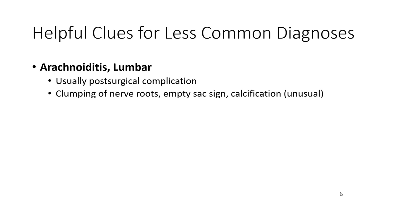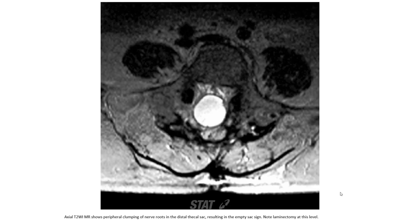Arachnoiditis is usually a post-surgical complication, featuring clumping of nerve roots, empty thecal sac sign, and calcification and ossification. Axial T2WI shows peripheral clumping of nerve roots in the distal thecal sac resulting in an empty thecal sac sign. Note the laminectomy defect at this level.